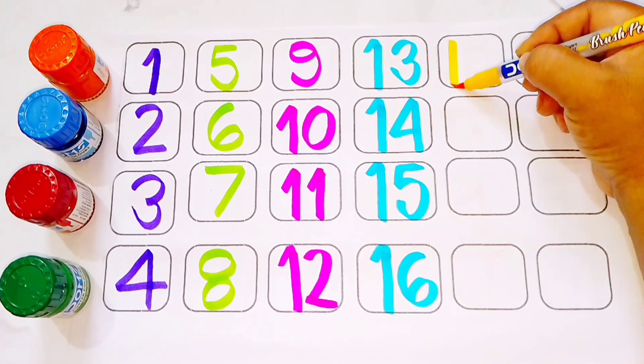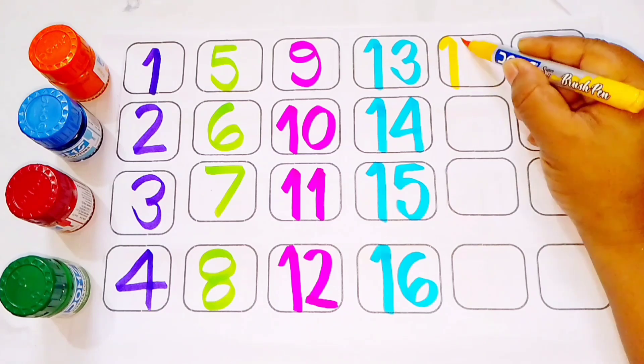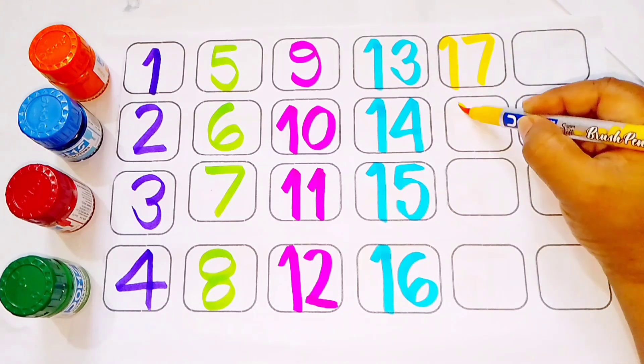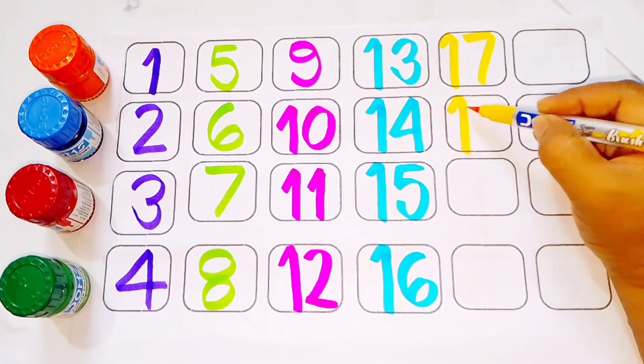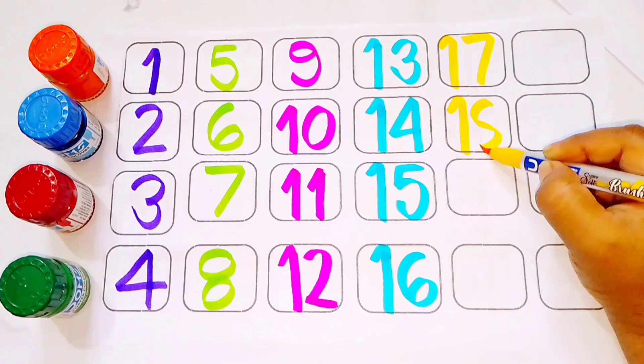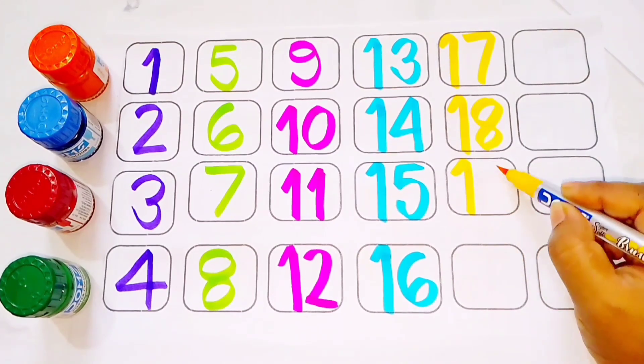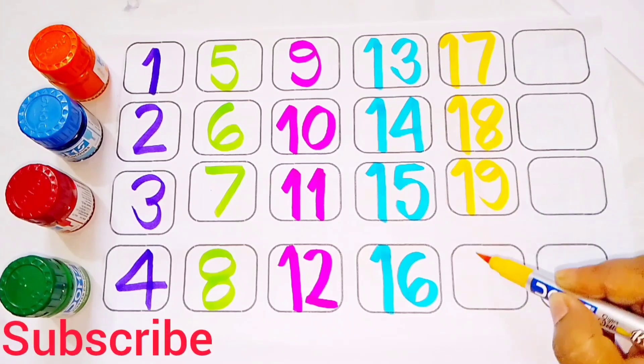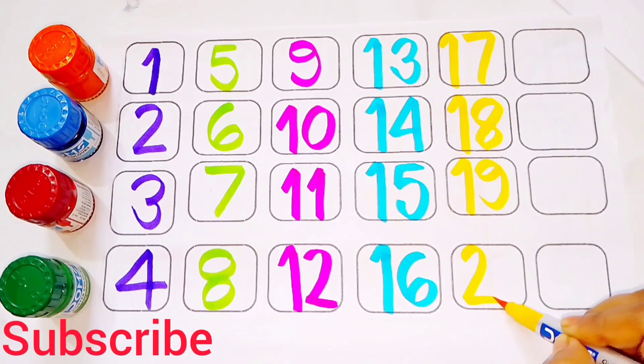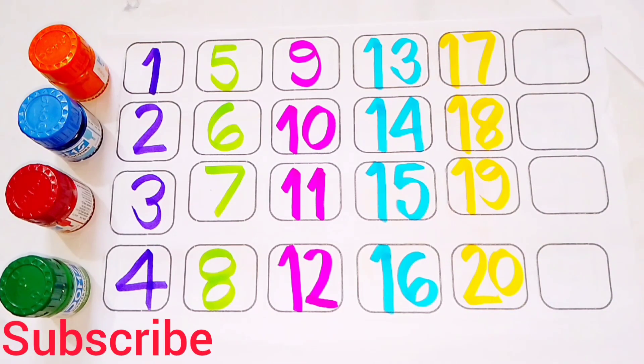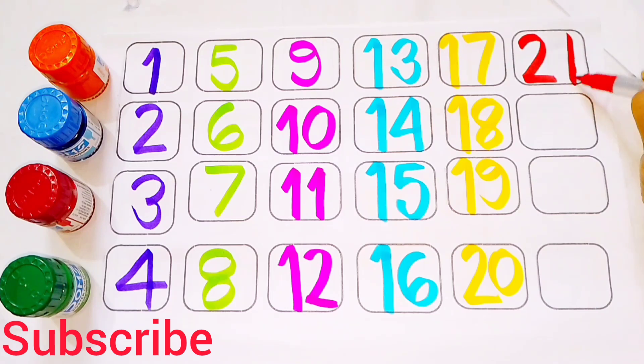Yellow color 17. 1, 7. S, E, V, E, N, 7. T, W, E, N, 18. E, I, G, H, T, E, E, N. 19. N, I, N, E, T, E, E, N, 19. 2, 0, 20. T, W, E, N, T, Y. 21.